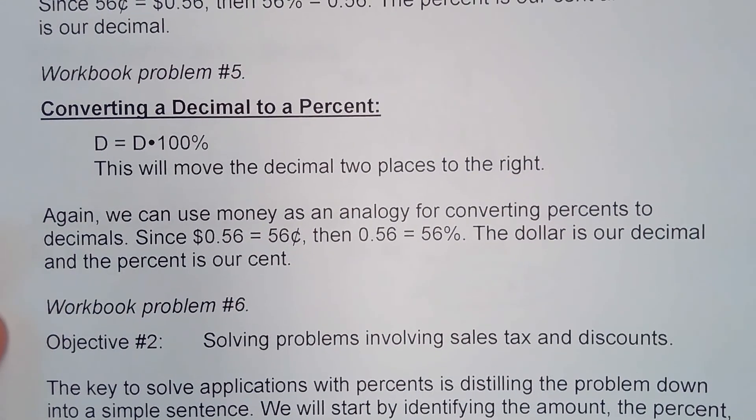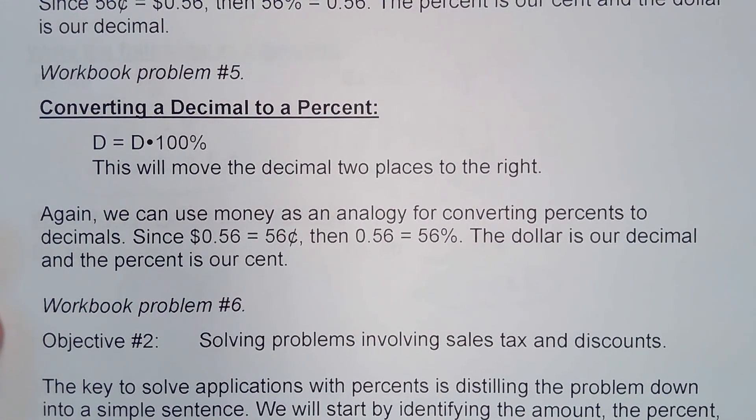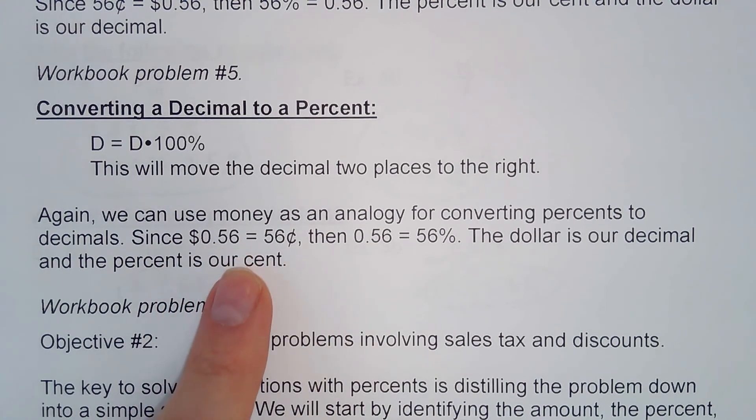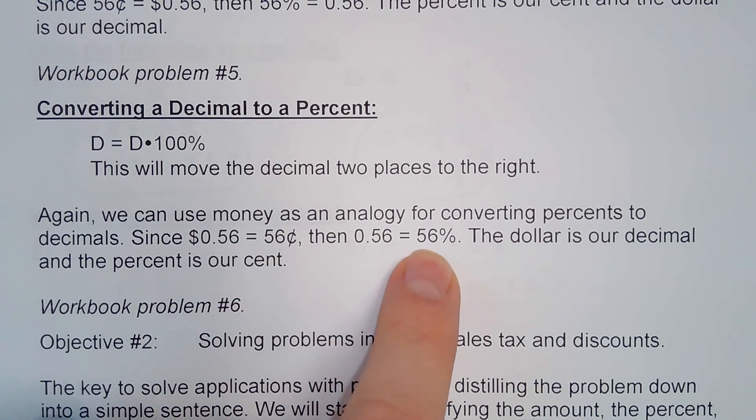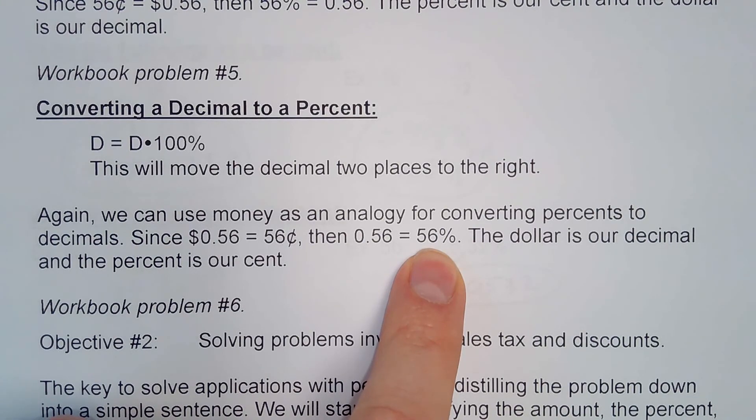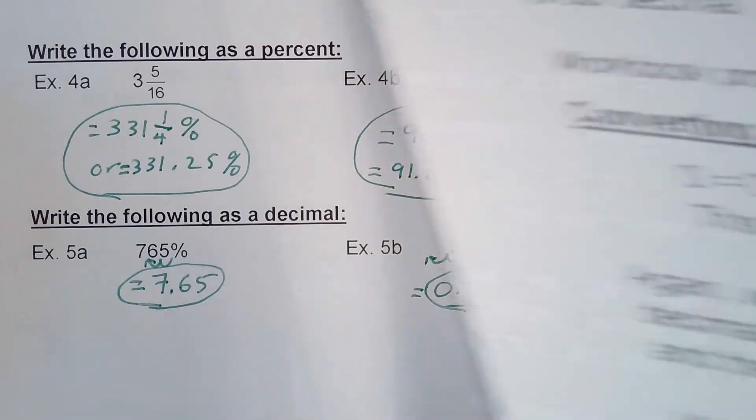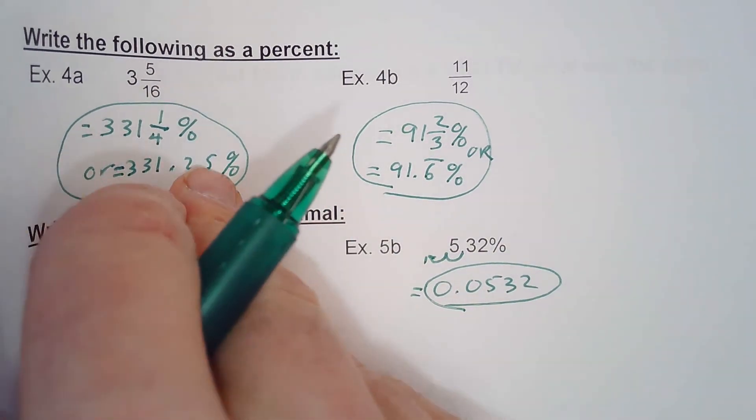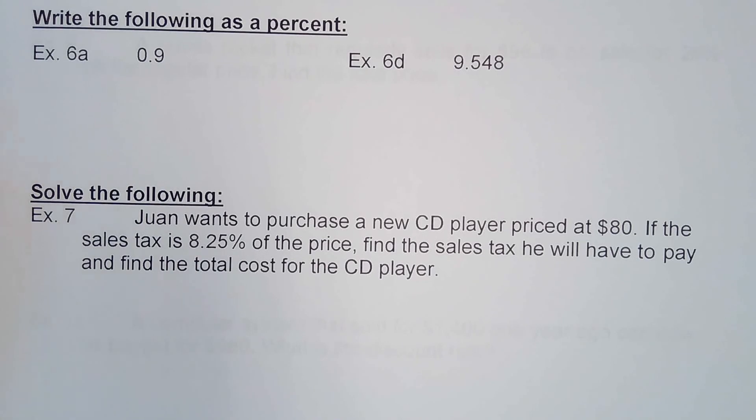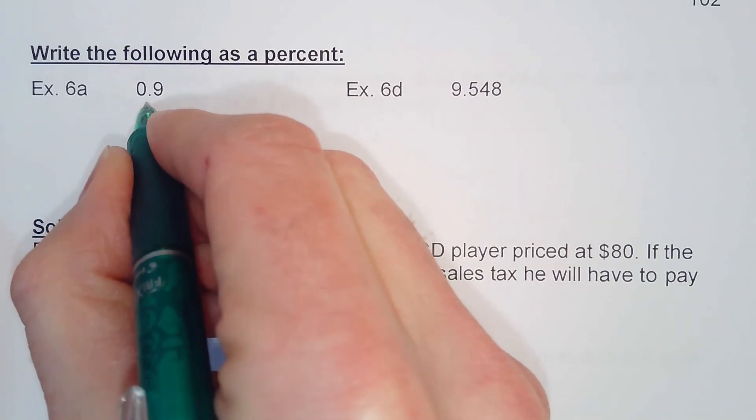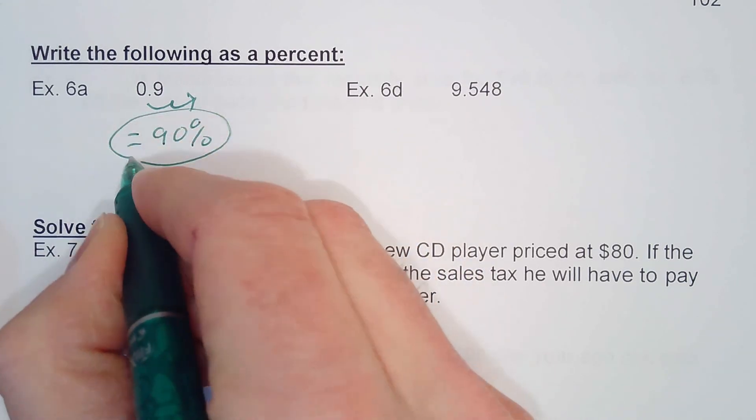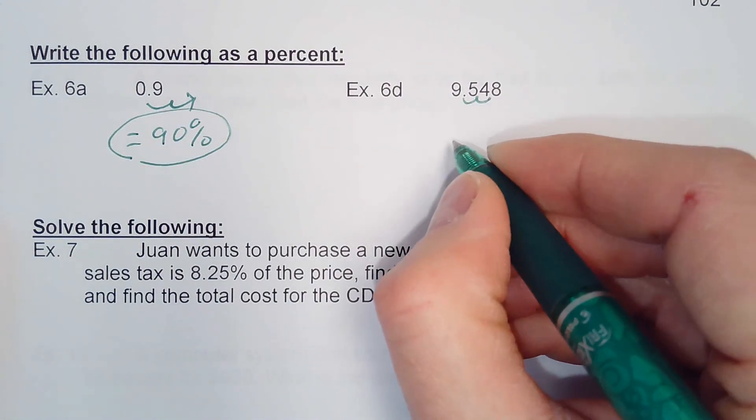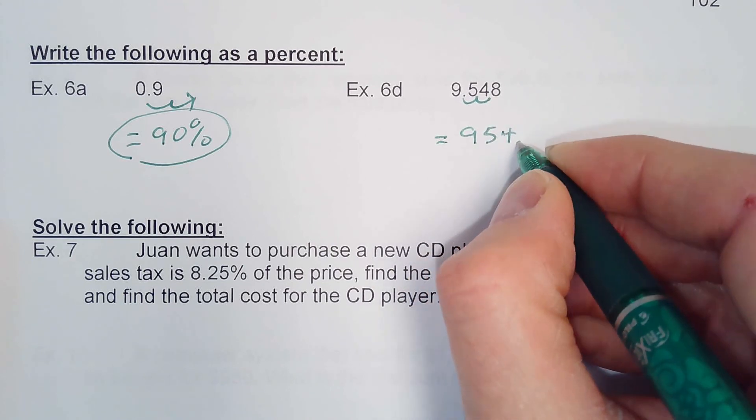Finally, we're going to talk about converting a decimal to percent. Instead of going to the left, you're going to move your decimal point two places to the right. And again, you can think about the analogy with money. If $0.56 equals 56 cents, then 0.56 equals 56%. Again, thinking the dollars is our decimal and the percent is our cent. So go ahead and do the problem on page 102. So 0.9 changes to percent by moving it two places to the right; that becomes 90%. And here, move it two places to the right: that becomes 954.8%.